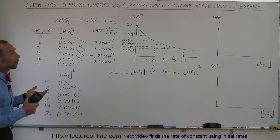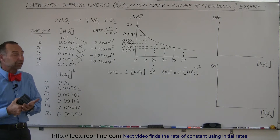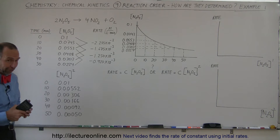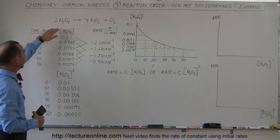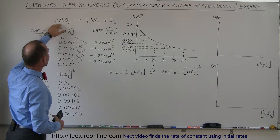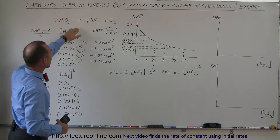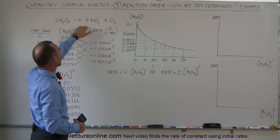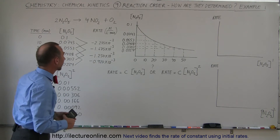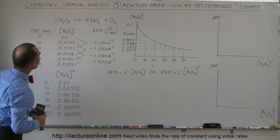Here we're going to do a real example of how they determine the reaction order of a reaction. It's a fairly simple reaction — there's only one reactant, dinitrogen pentoxide, and that's going to dissociate into four molecules of nitrogen dioxide and oxygen gas.